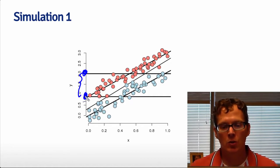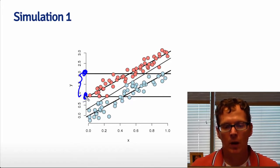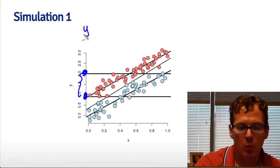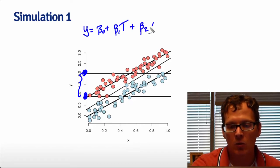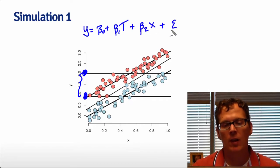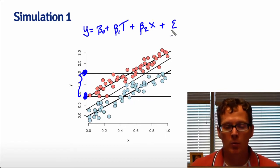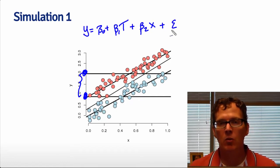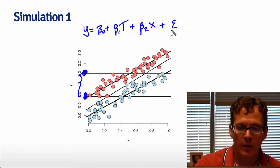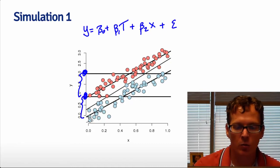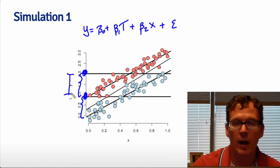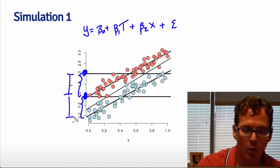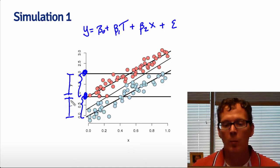There's a pretty clear linear relationship between the outcome and the regressor. So we could fit a model that looks like Y equal to beta naught plus beta 1 times our treatment indicator plus beta 2 times X plus epsilon. This would fit two parallel lines. Beta 1 would represent the change in the intercepts between the groups, whereas beta 2 would be the common slope that exists across the two groups. The marginal effect and the effect when we incorporate X in a linear model are about the same.